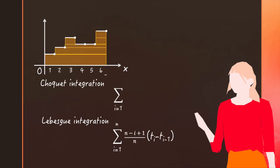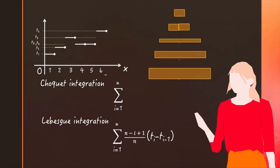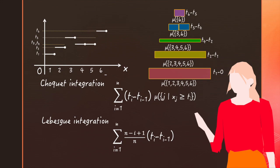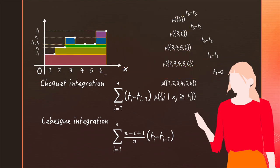Now the Choquet integral works horizontally too. The only difference is that we no longer assume our widths to be proportionate to the elements included in each set. Each of the widths of these pseudo-rectangles are determined by the fuzzy measure values of the corresponding subset.